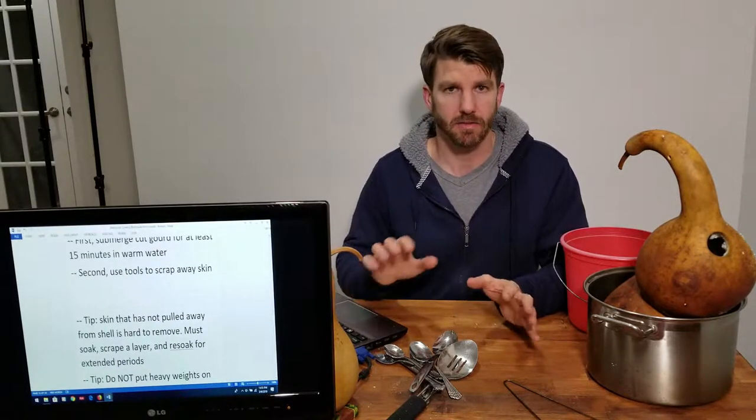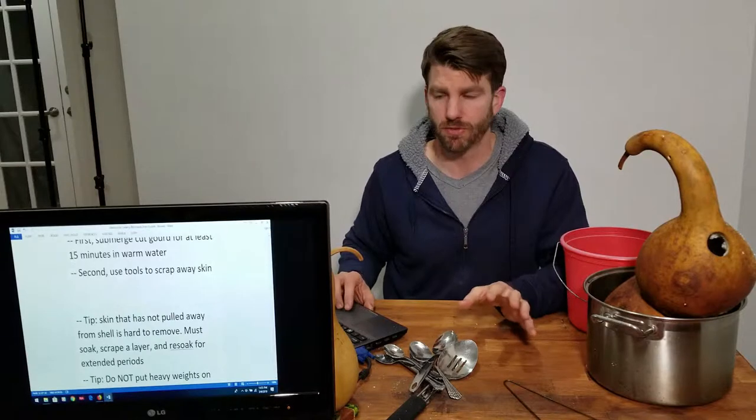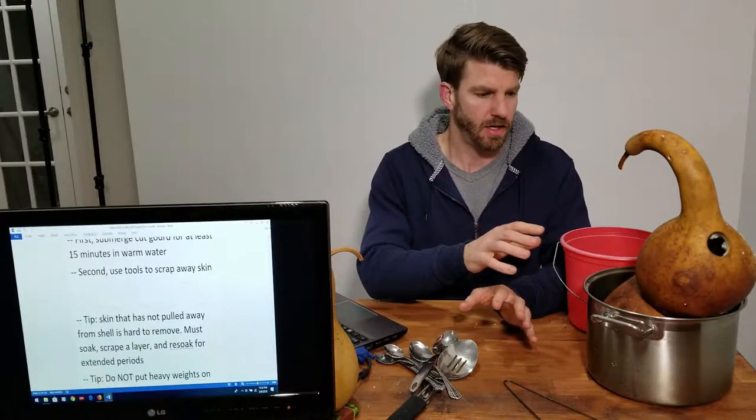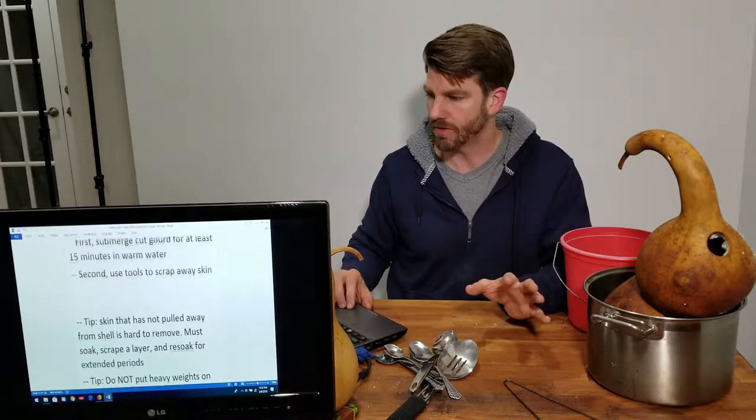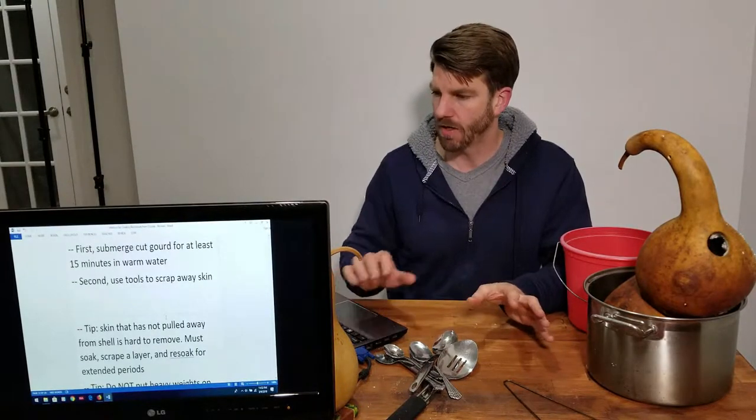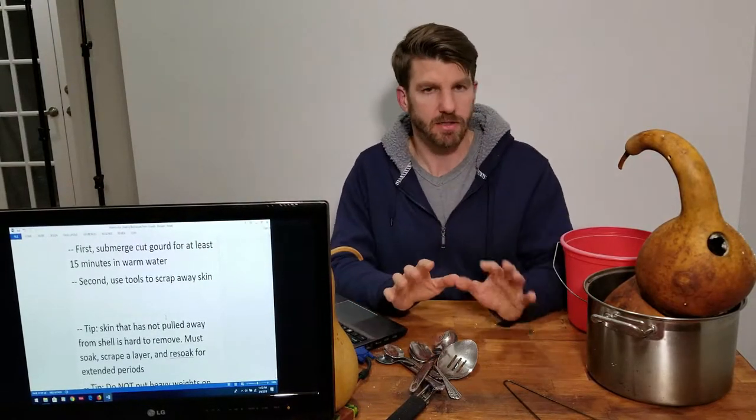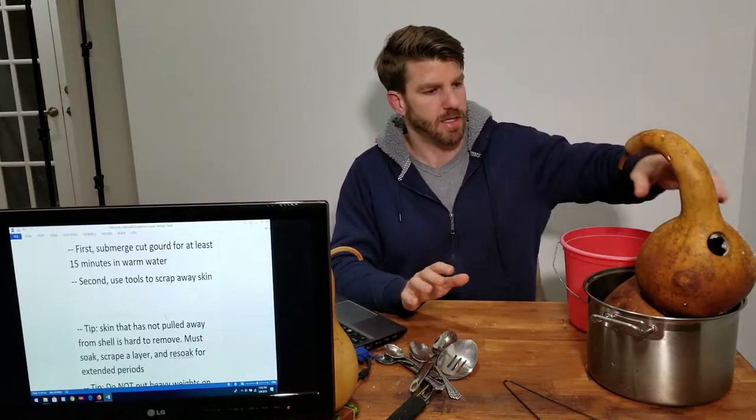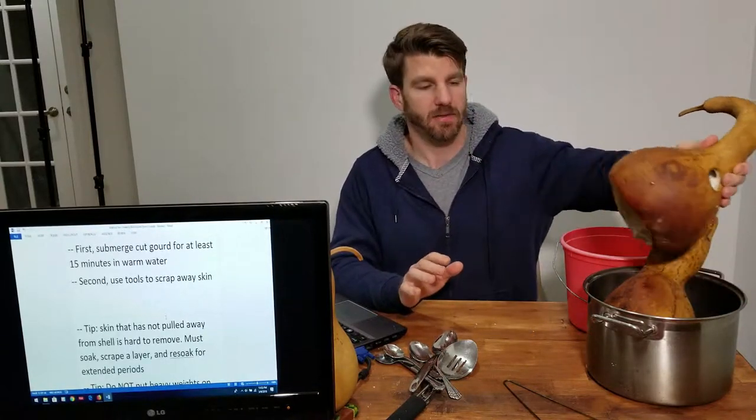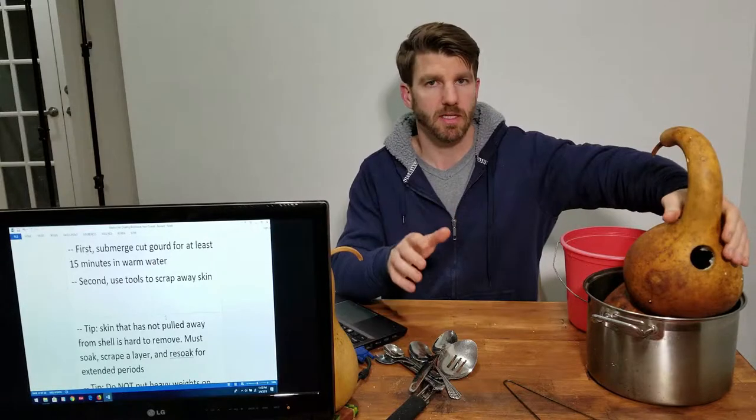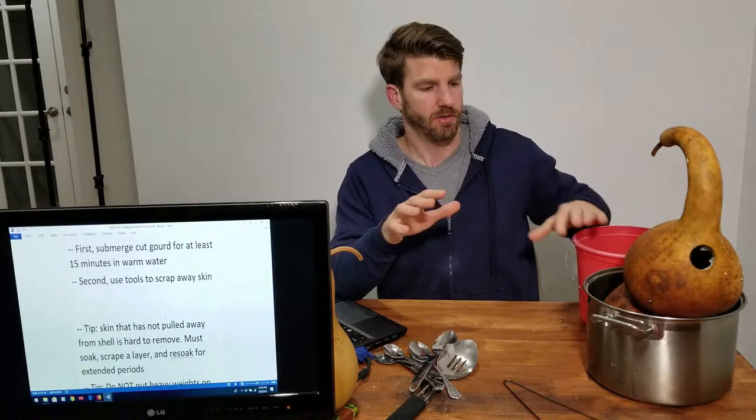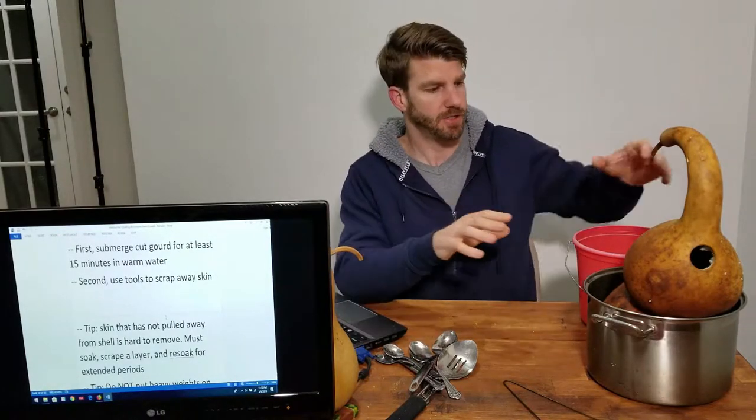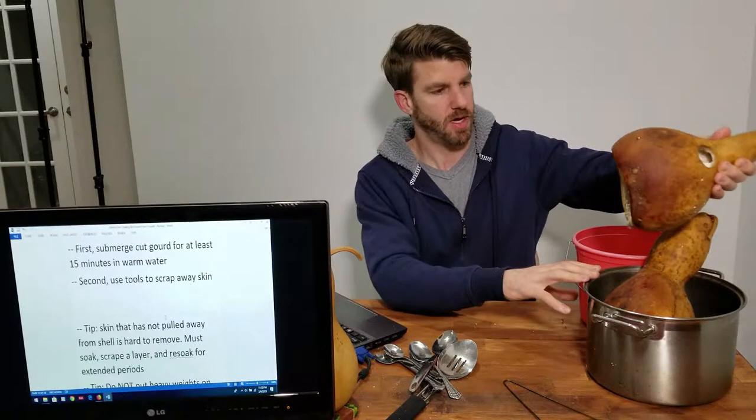In the first part of this section, I went over the tools and how to clean out as much of the inside with your hand before we soak it. During that pause, I put these in a five-gallon bucket in warm, almost hot water for about 20 minutes. I just took them out and put them in this pot.